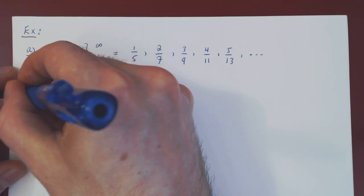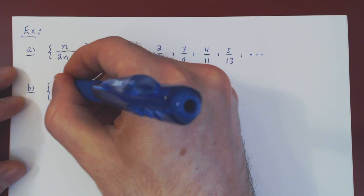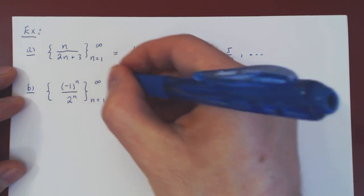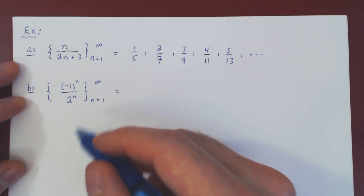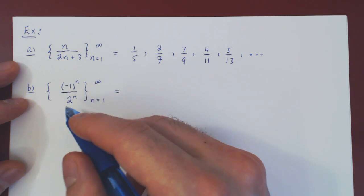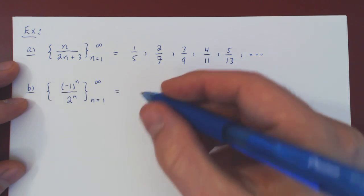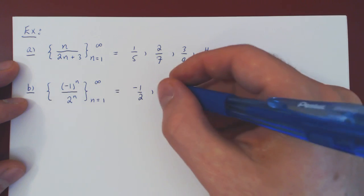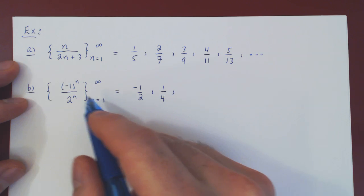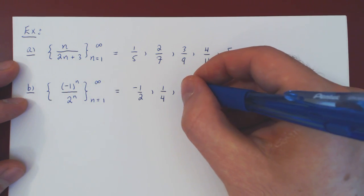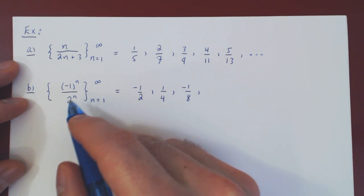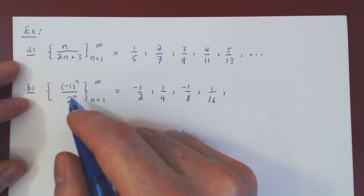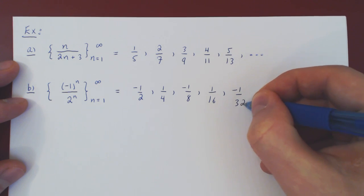Let's look at another example: (-1)^n / 2^n, ranging from n=1 to infinity. When n=1: (-1)^1 / 2^1 = -1/2. When n=2: (-1)^2 / 2^2 = 1/4. When n=3: (-1)^3 / 2^3 = -1/8. When n=4: positive 1 / 2^4 = 1/16. When n=5: (-1)^5 / 2^5 = -1/32, and so forth.